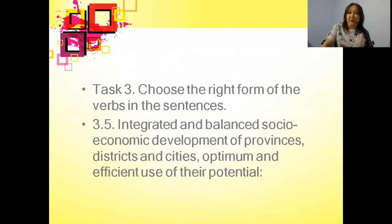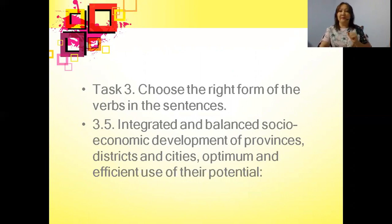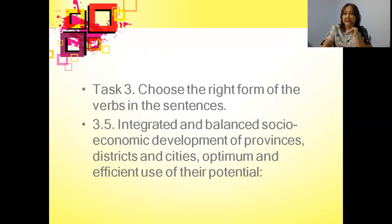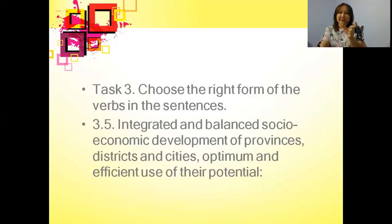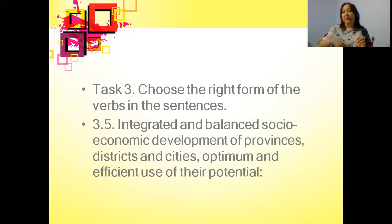Next, you are going to do task number 3, working with strategy number 3, which is 'Integrated and Balanced Socio-Economic Development of Provinces, Districts and Cities — Optimum and Efficient Use of Their Potential.' You need to choose whether each verb form is an infinitive, a gerund, or a participle, and so on. You can ask your teacher if you have difficulties.